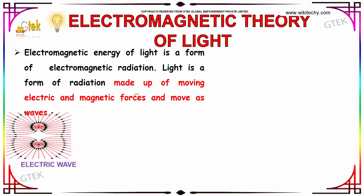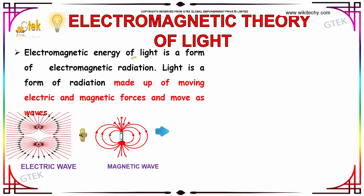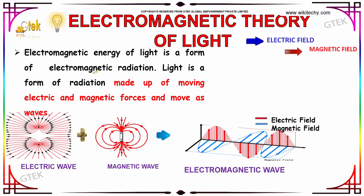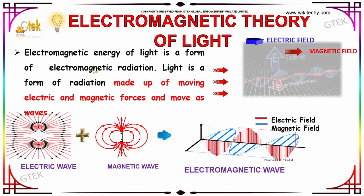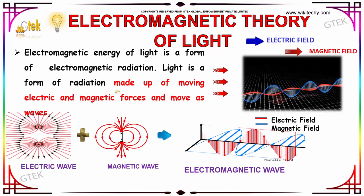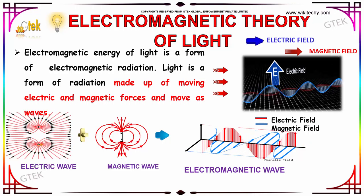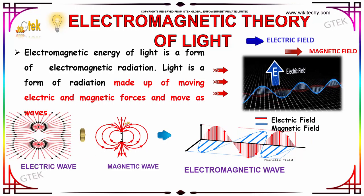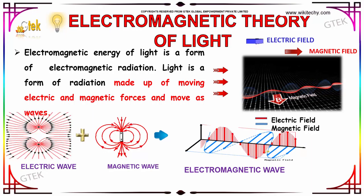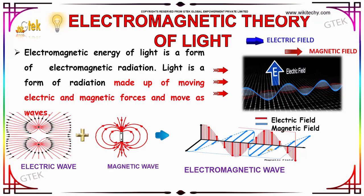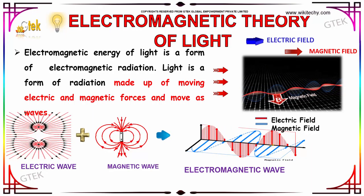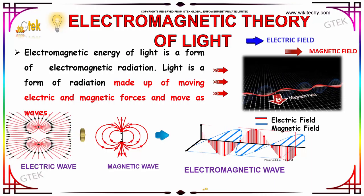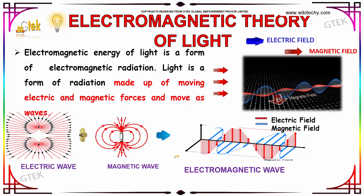Moving further, the energy of light is a form of electromagnetic radiation. Light is a form of radiation made up of moving electric and magnetic forces, and moves as waves too. The electric and magnetic fields combined make up what is called an electromagnetic wave.